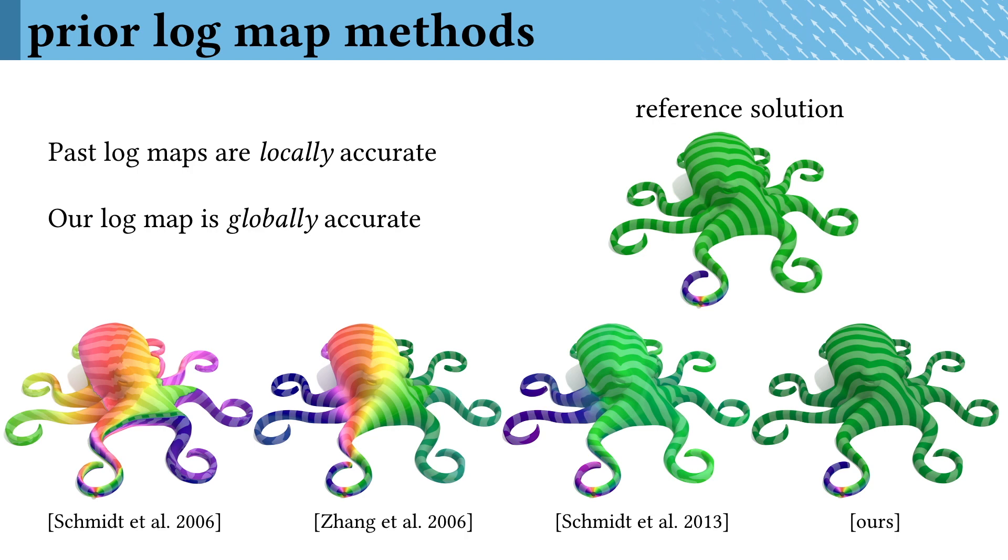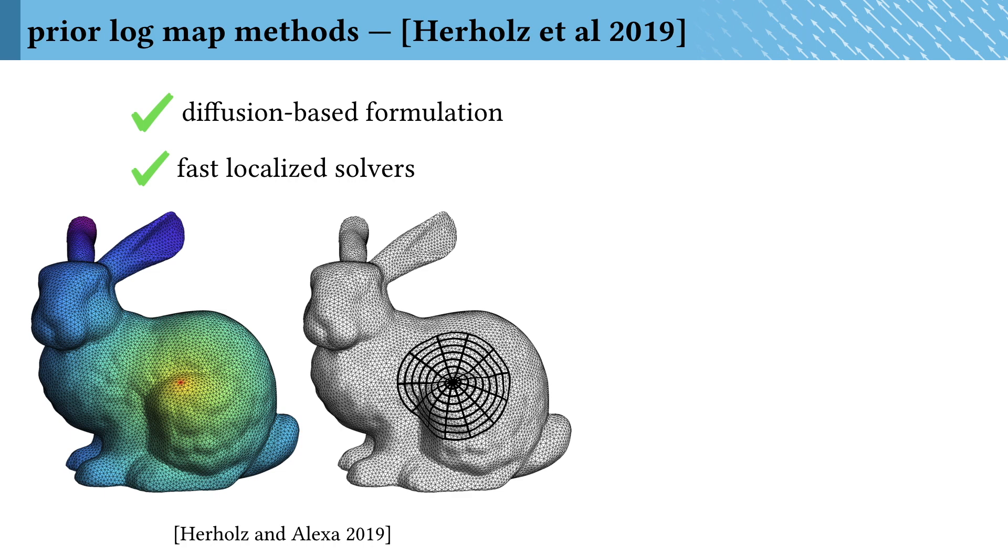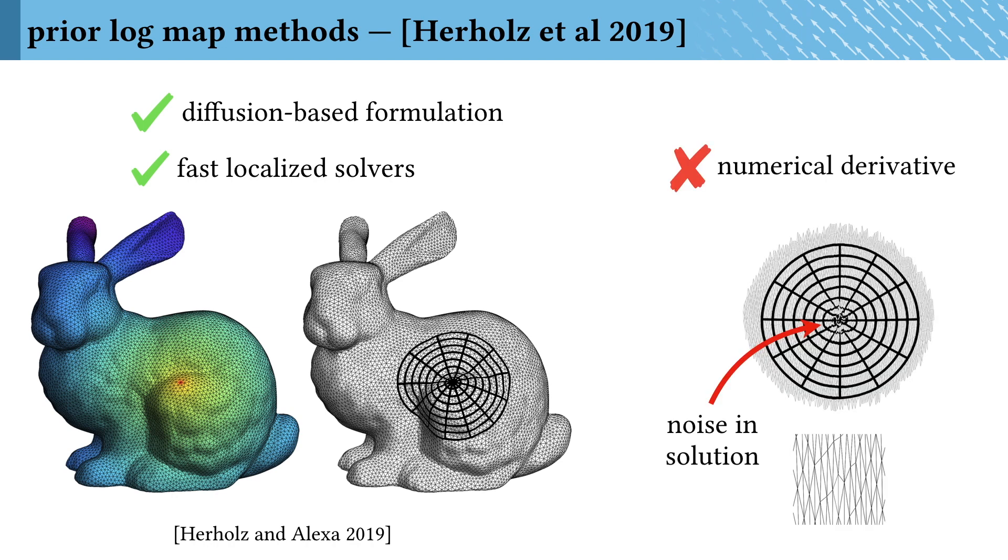Some very recent concurrent work by Herholz and Alexa actually does make use of short-time heat flow to compute a logarithmic map, and they also demonstrate localized solvers for fast performance. But unfortunately, since they don't have parallel transport, they end up approximating a numerical derivative, which comes with its own set of pitfalls.